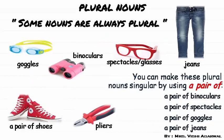And there are also some nouns which are always plural. For example: goggles, spectacles, glasses, binoculars, pliers, jeans, a pair of shoes. We can make these plural nouns singular by using 'a pair of'. For example: a pair of binoculars, a pair of spectacles, a pair of goggles, a pair of jeans, a pair of shorts, a pair of pliers, a pair of shoes.